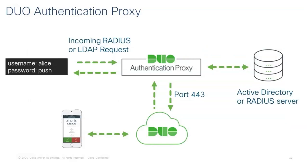The third component is the Duo Authentication Proxy — an on-premises software service that receives authentication requests from your local devices and applications via RADIUS or LDAP. Optionally, it performs primary authentication against your existing LDAP directory or RADIUS authentication server like ISE, and then contacts Duo to perform the secondary authentication. It's a very lightweight service that can run on a Windows or Linux server. It can be configured to handle only the second-factor authentication while leaving primary authentication to the main server. It also has built-in troubleshooting tools and logs.